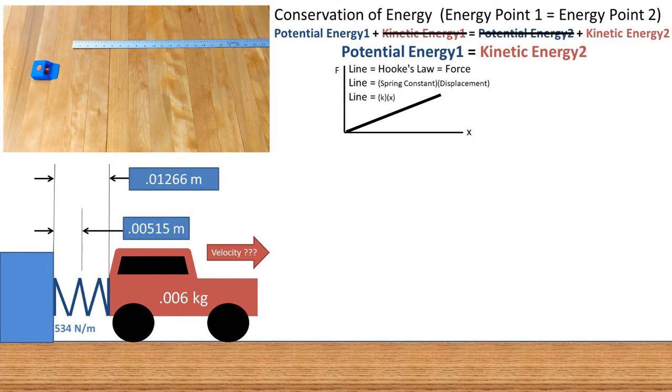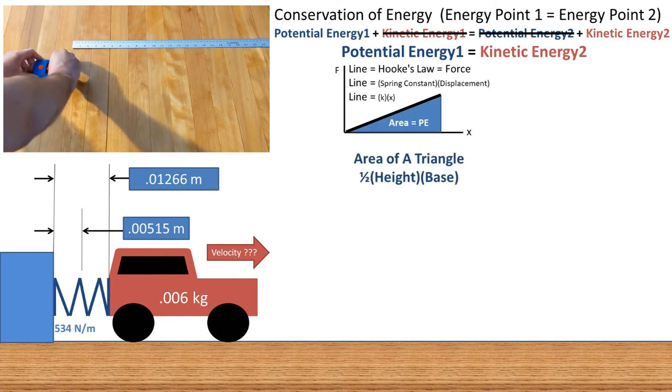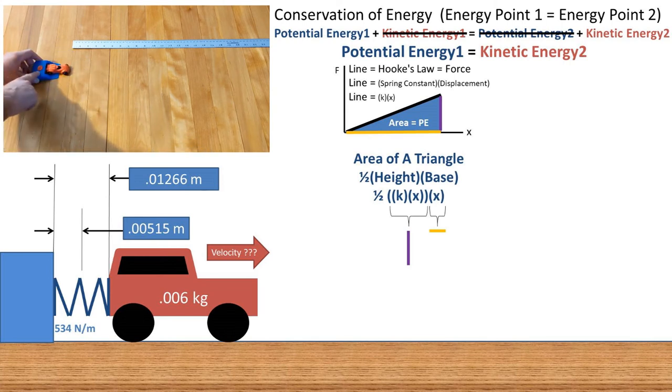Energy is being released, so I'll be using a positive spring constant. Now the area underneath this line is equal to the potential energy, and is equal to the area of a triangle of 1 half height times base. The height of the triangle is the spring constant times x, which is the y value at a given point, and the base is the distance x from the origin.